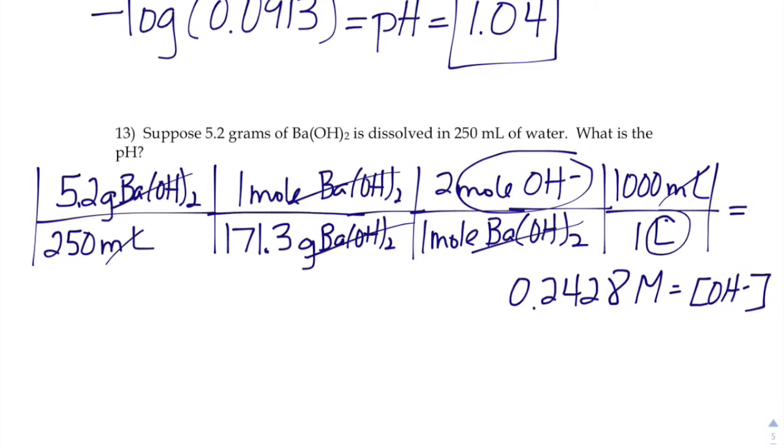If I took the negative log of that number, that would get me the pOH. So that should be somewhere in the realm of 0.61475, something like that.